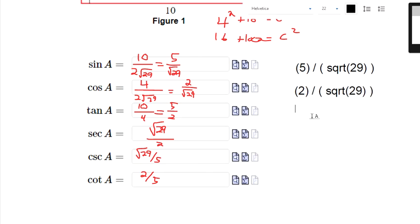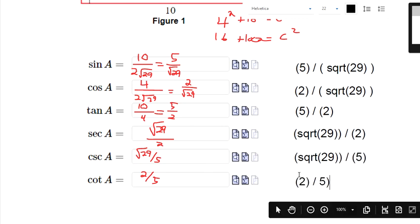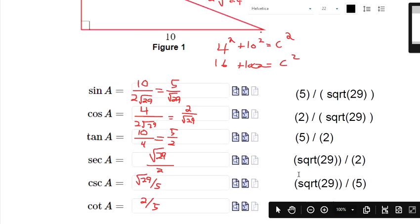And then for tangent, it's 5 divided by 2. I really don't think the parentheses are necessary for those, but we don't want Mobius to get too picky with us. SQRT 29, that's my numerator. Divide by 2, my denominator. SQRT 29 divided by 5. And then I have 2 divided by 5 here. So there's our final answers.